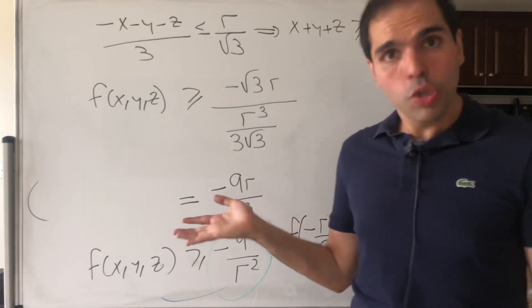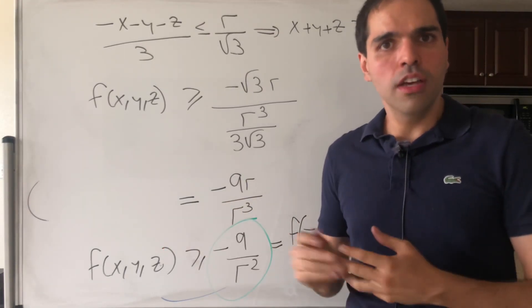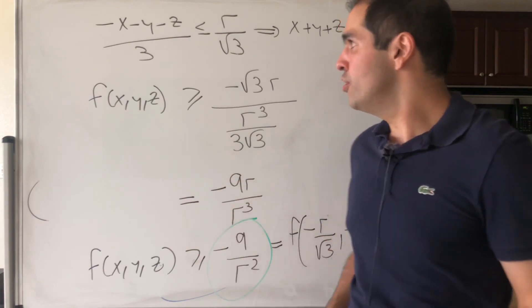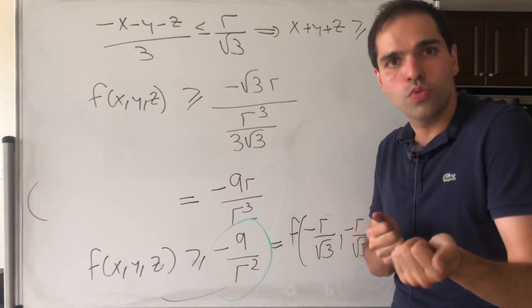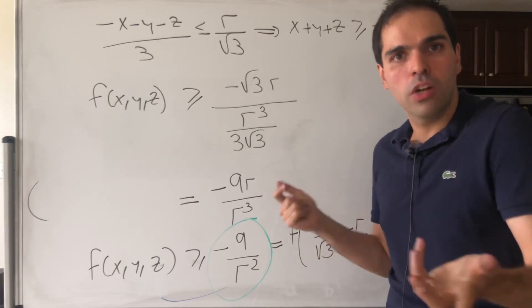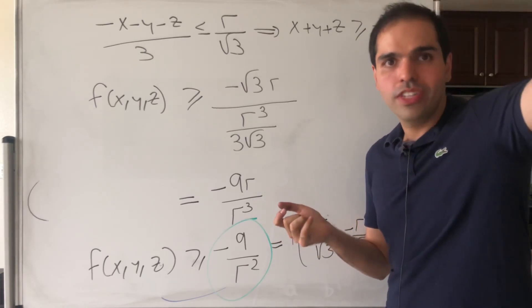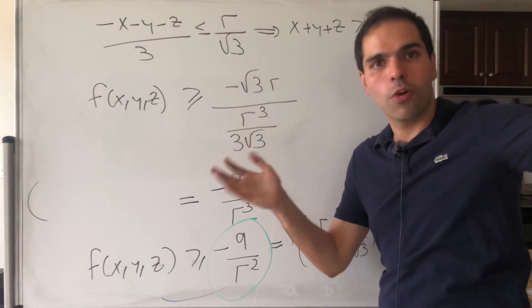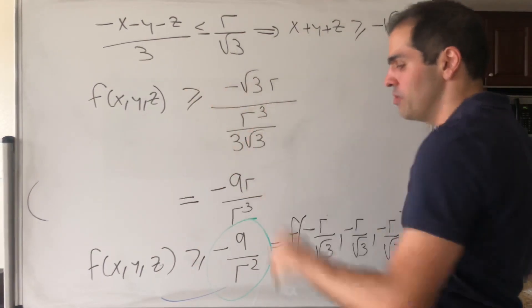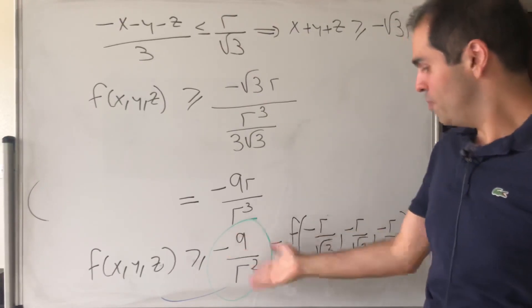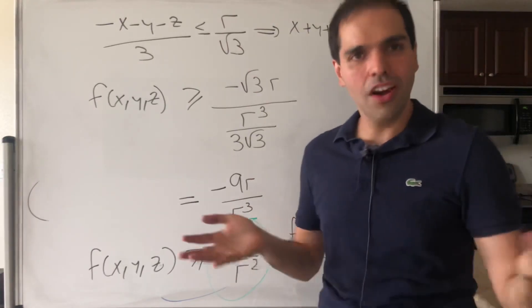And finally, you may ask, what about the maximum value? Well, all you can choose is simply x and y to be close to 0, and then z to be close to r. Then what you get is something r over 0 plus, and that is plus infinity. So, in fact, the maximum value doesn't exist, but at least the minimum value does. How exciting.